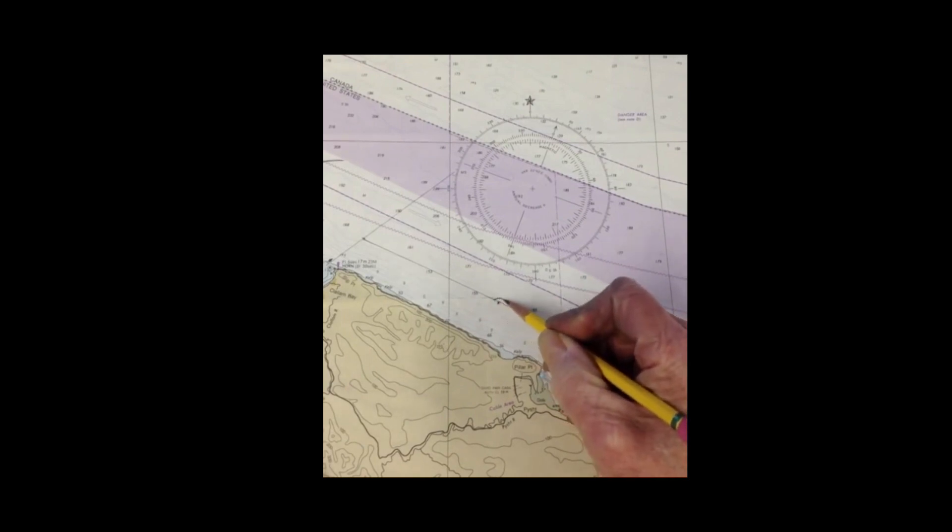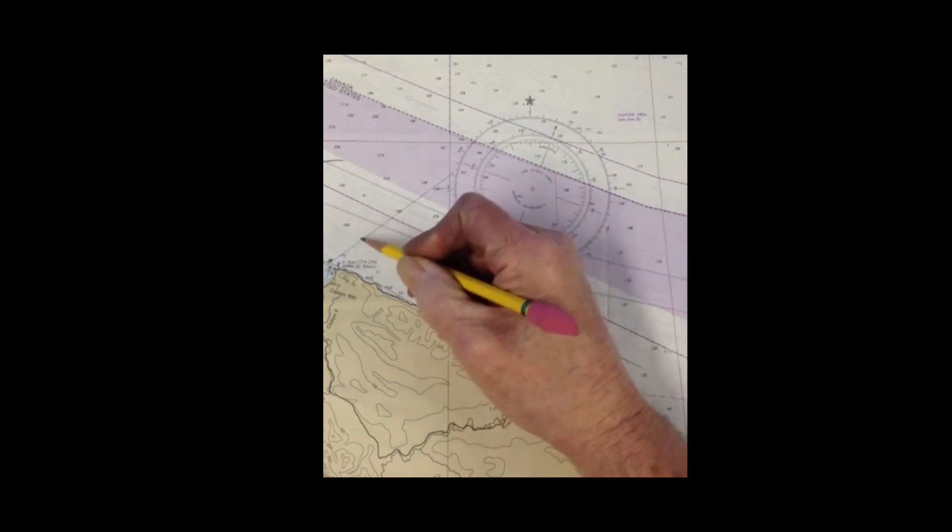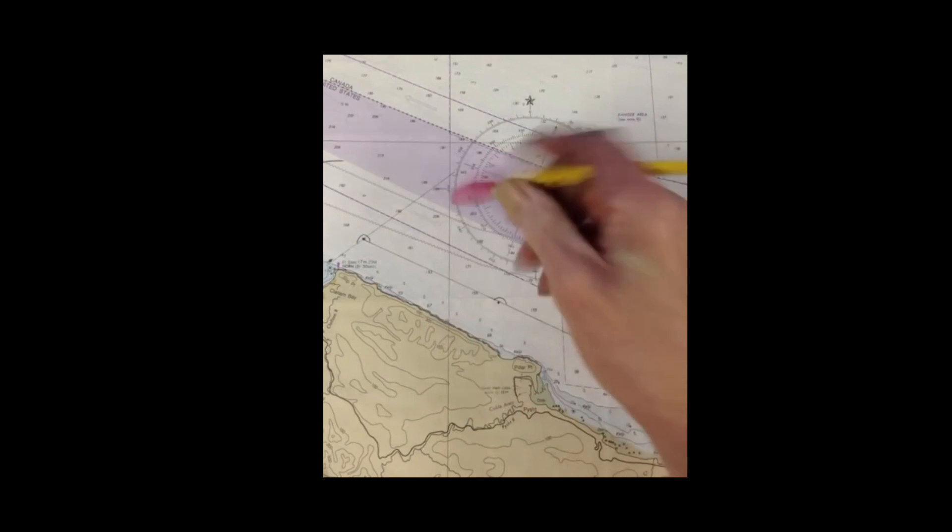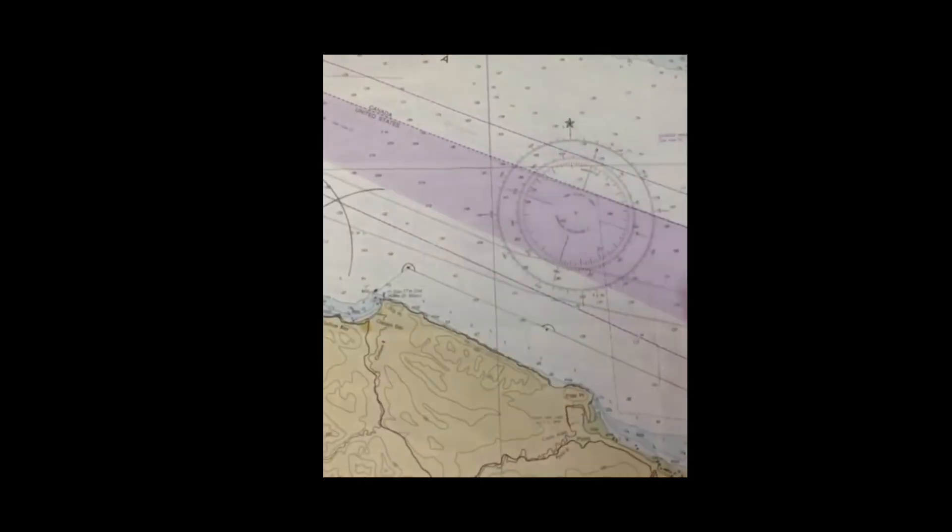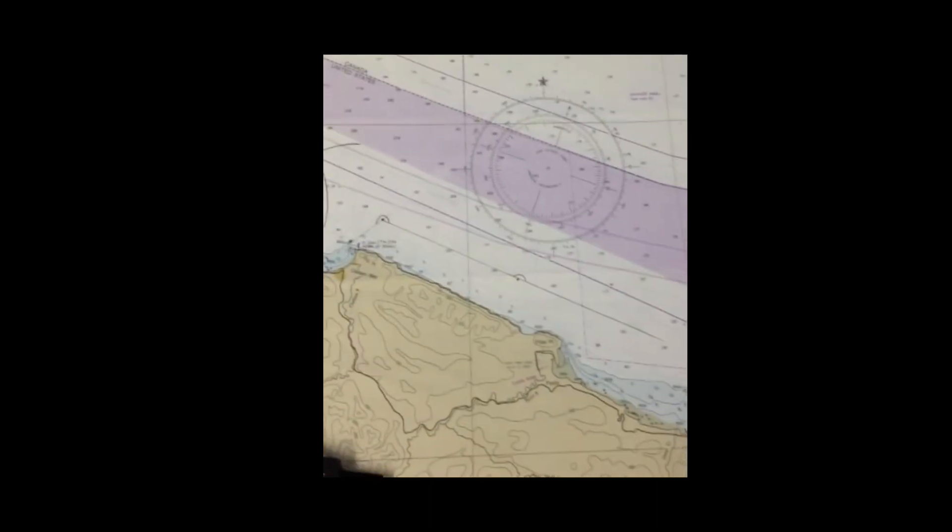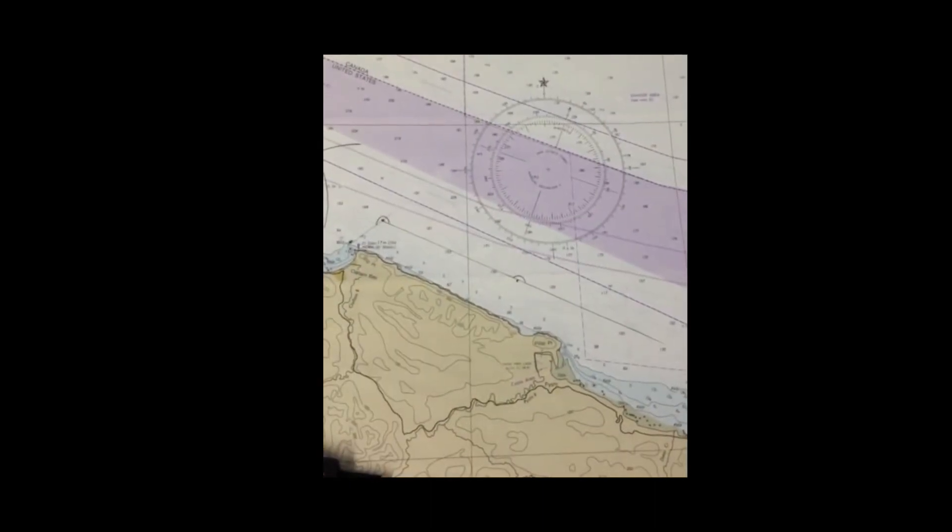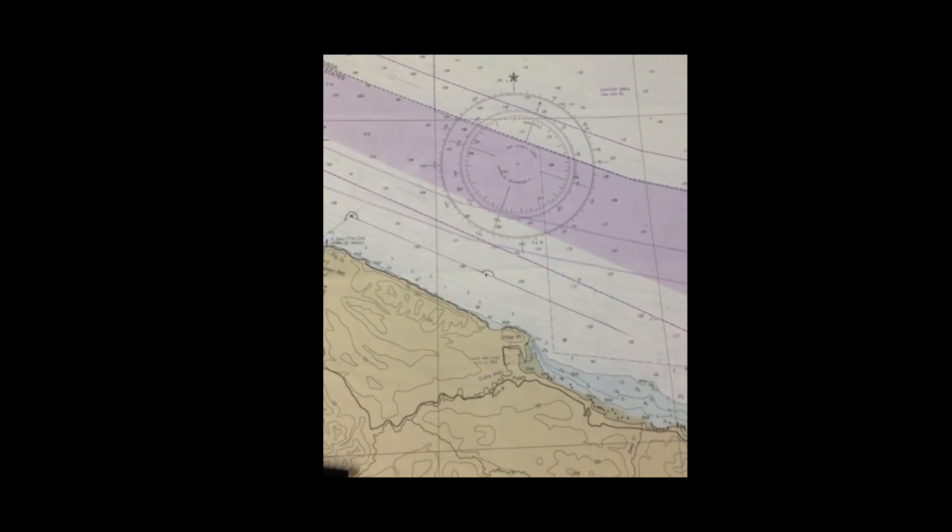Normally I put a dot and then a circle. These are DR positions. This line up here no longer has any value on the chart, we can just get rid of it. So there's our course like that. And now the next job will be to read the latitude and longitude.